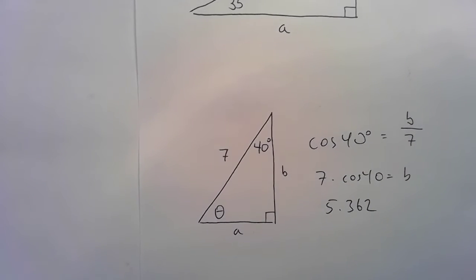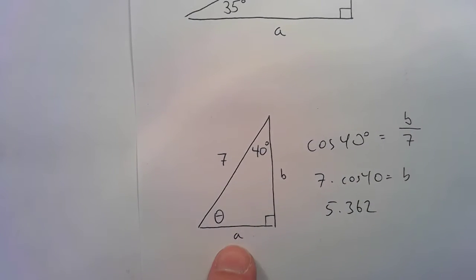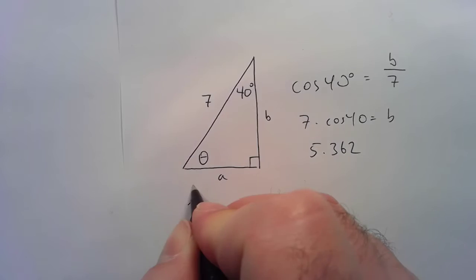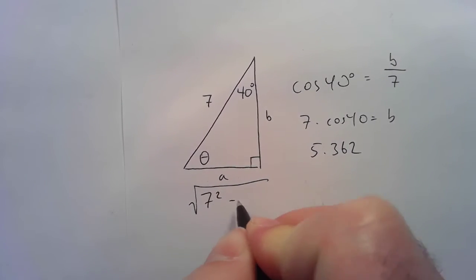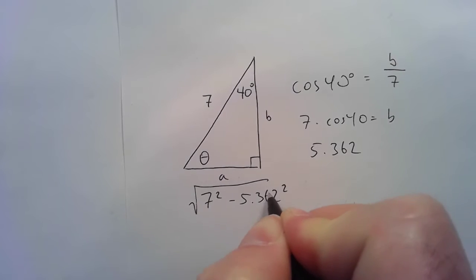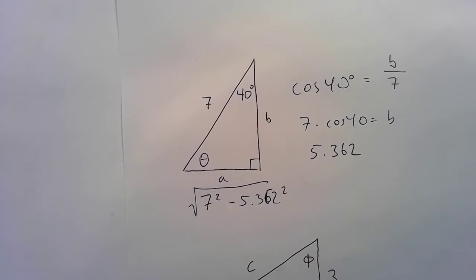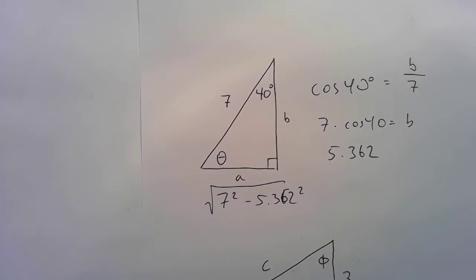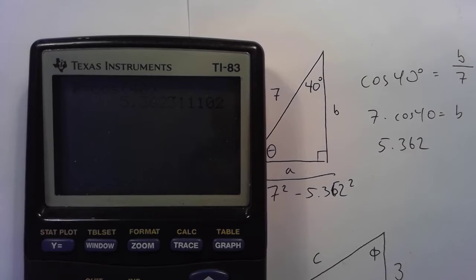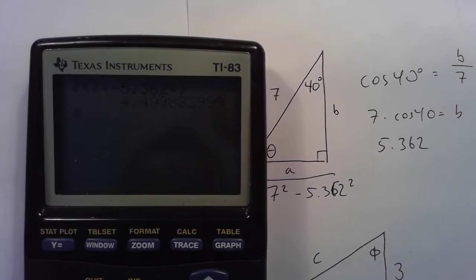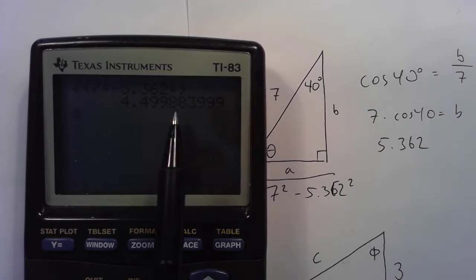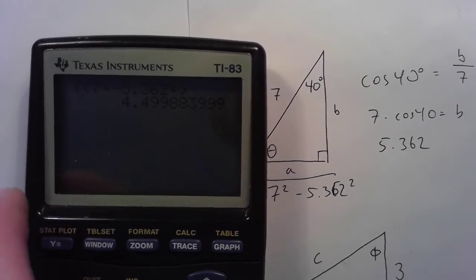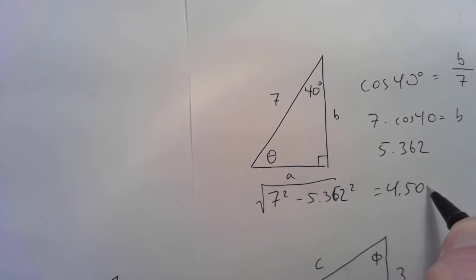So 7 times the cosine of 40° is 5.362. So, now that we've got that side, 5.362, this one you can get by the Pythagorean theorem like this. It's the square root of 7 squared minus 5.362 squared. So, if I enter it into the calculator just like that, the square root of 7 squared minus 5.362 squared, 4.499, although the digit following the 9 is an 8. So, that actually rounds up to 4.500.